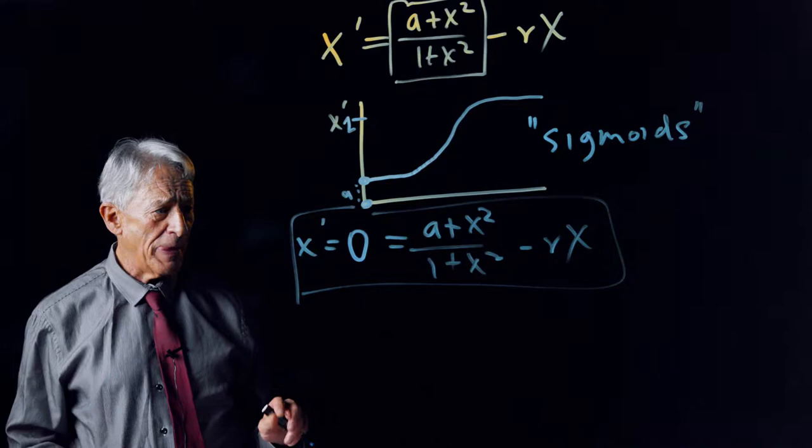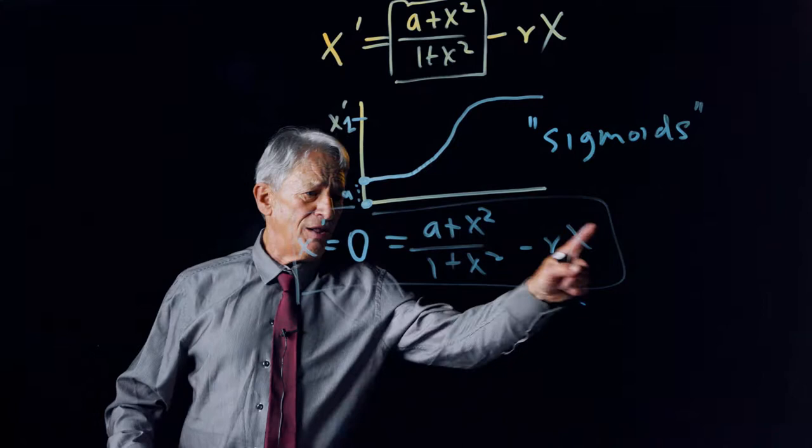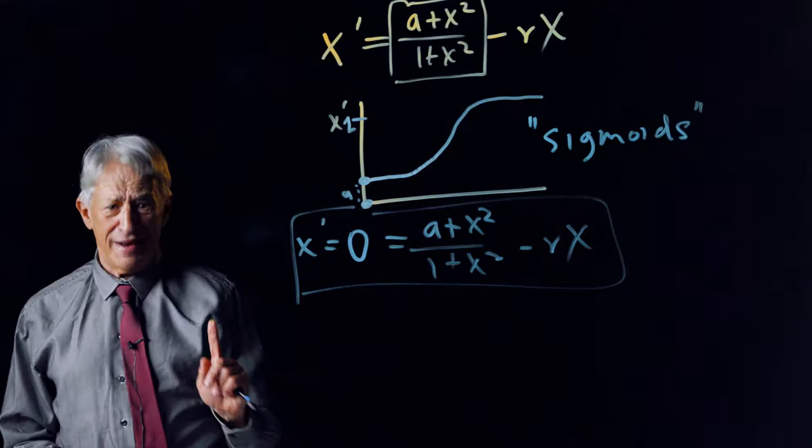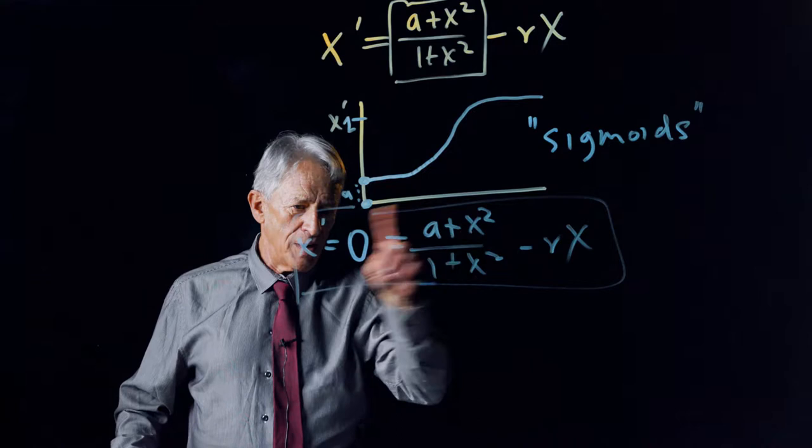And now the question is, how do we find these equilibrium points? How do we solve this equation for x? So here's a bad idea: multiply this out, multiply both sides by 1 plus x squared.